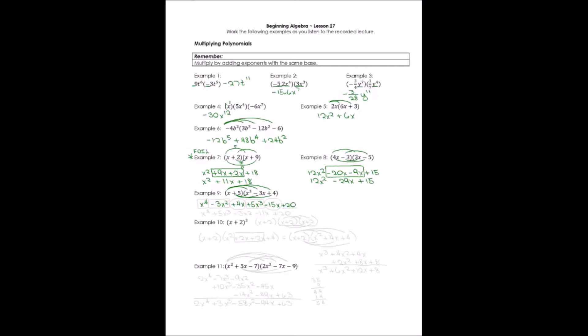To combine like terms, we start with the highest exponent. x to the 4th stands alone. Then 5x cubed stands alone. Then negative 3x squared stands alone. For the x terms: 4x minus 15x gives negative 11x. And the final term is plus 20. We end up with a polynomial of 5 terms.